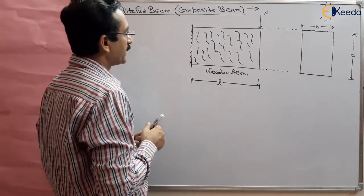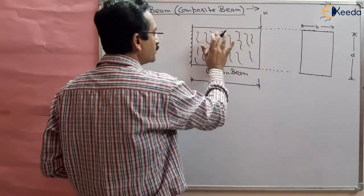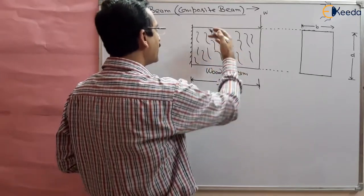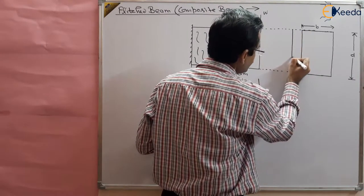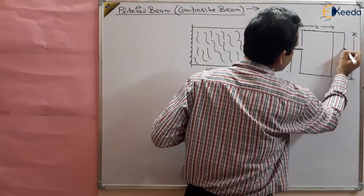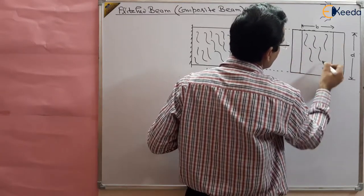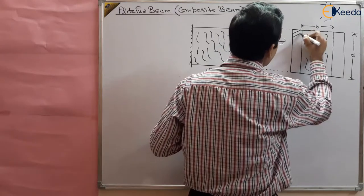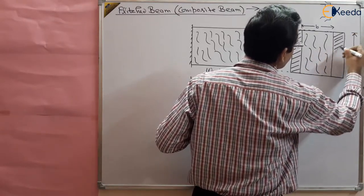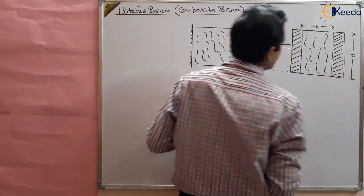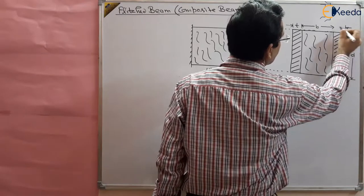We are applying along this entire length a plate of some thickness — we want to use steel plates on both sides. This is a rectangular beam, so we can use steel plates of the same thickness on both sides. This was our wood and this is the steel plate applied. The steel plate has a thickness T, applied on both sides.